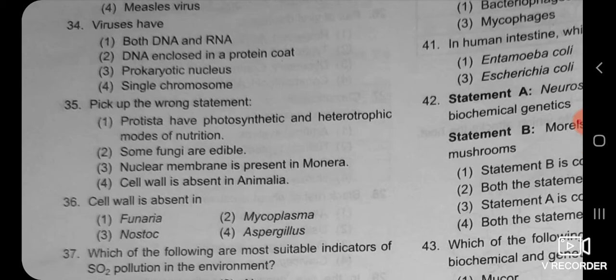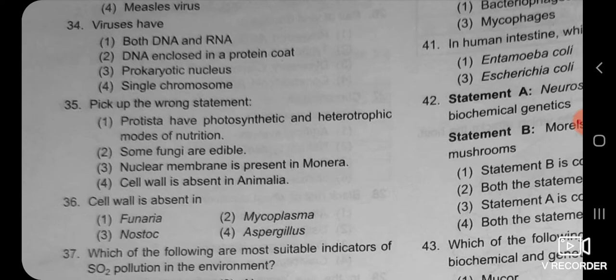The next MCQ options are: viruses have both DNA and RNA; DNA enclosed in a protein coat; prokaryotic nucleus and single chromosome. The first option is incorrect because we have already discussed that a virus has either DNA or RNA, but at a time it does not contain both DNA and RNA. So the first option is incorrect.